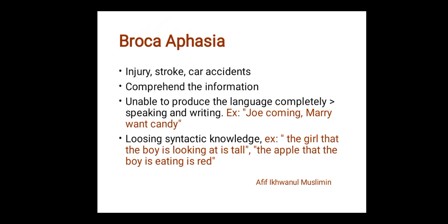For example, persons who suffer from Broca's aphasia tend to not use inflections correctly — like saying 'Mary want candy' instead of 'Mary wants candy.' They also tend to shorten utterances and omit auxiliary verbs, like saying 'Joe coming.' Sometimes they lose syntactic knowledge as well.